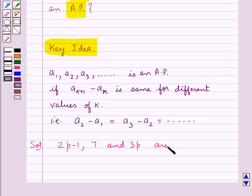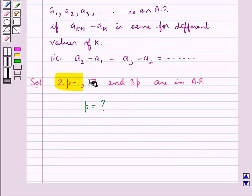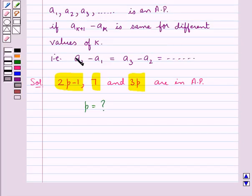These three terms are in AP and we have to find the value for P. Now, if these three terms are in AP, so using the key idea we have,